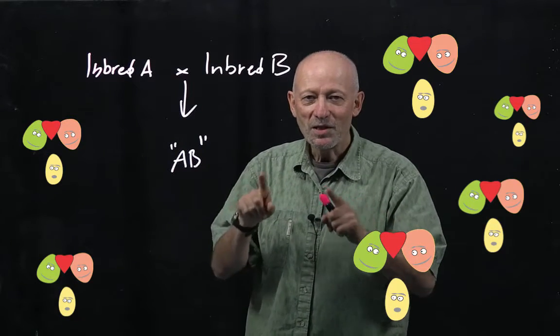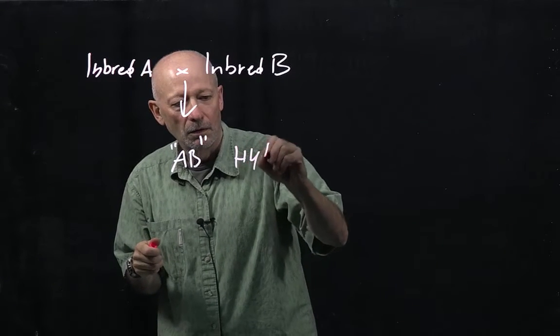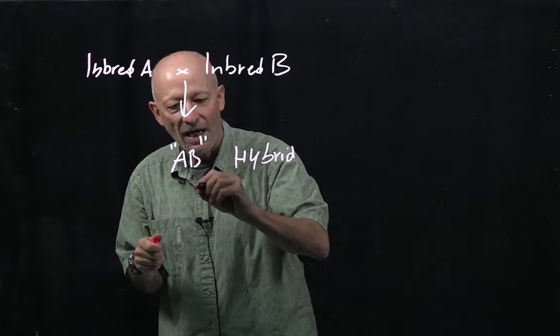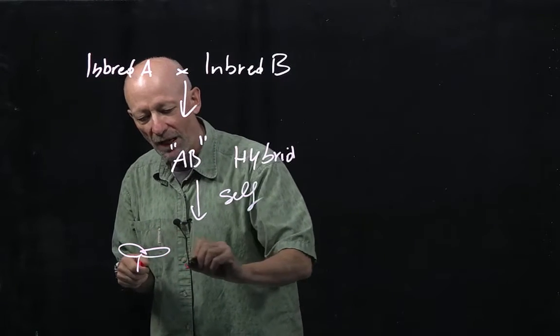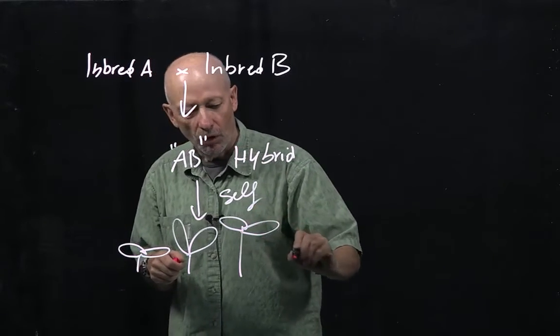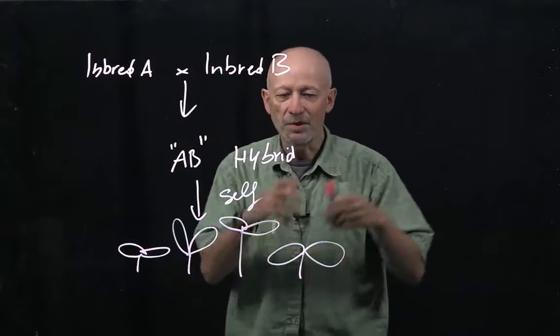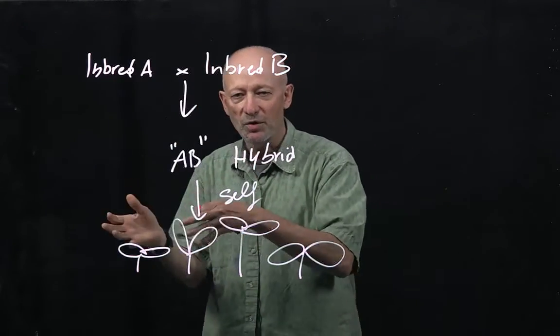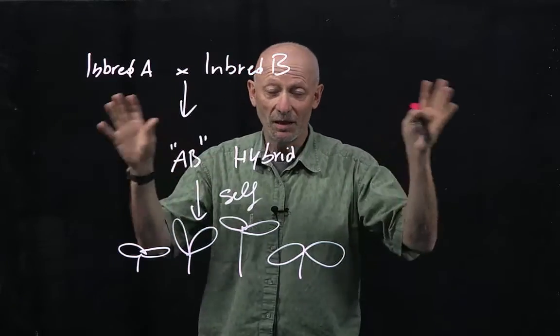Of course things stop right there because if we were to take this hybrid and self it, then we are going to get in the case of plants many different types which will all carry in fact different types of homozygous genes and heterozygous genes. So they will be reshuffling the whole genome and giving us a big variety.